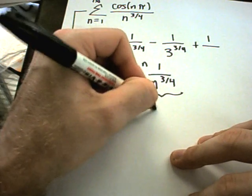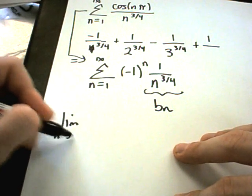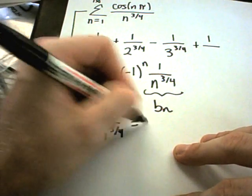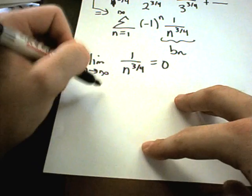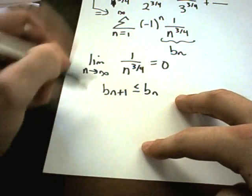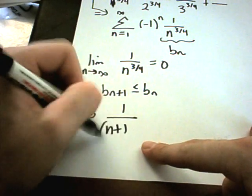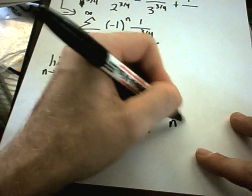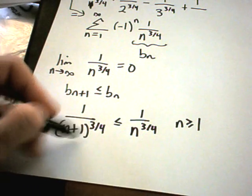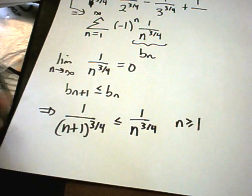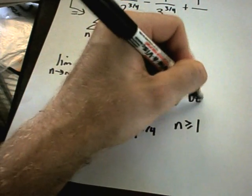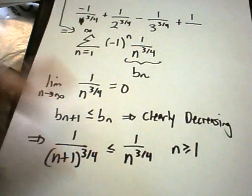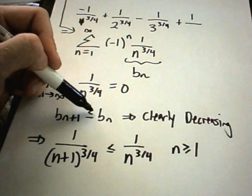And this one is pretty simple now. If I make this my b sub n, the limit as n goes to infinity of 1 over n to the 3 fourths is certainly going to be 0. And again, it's pretty obvious that this is decreasing. If we use the definition, certainly it's true that 1 over (n+1) to the 3 fourths is going to be less than or equal to 1 over n to the 3 fourths for n greater than or equal to 1 because I'm going to have something bigger in the denominator than I do on the other side, and that's going to make the entire thing smaller. So it's clearly decreasing as well. So I've now shown my two criteria. I've shown that the limit goes to 0. Again, it's pretty obvious that it's decreasing.